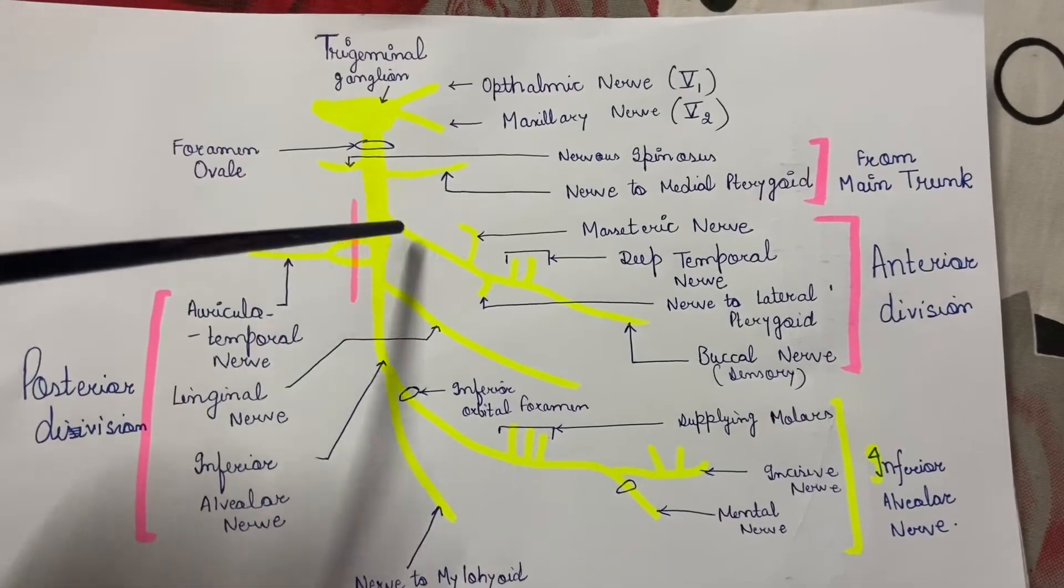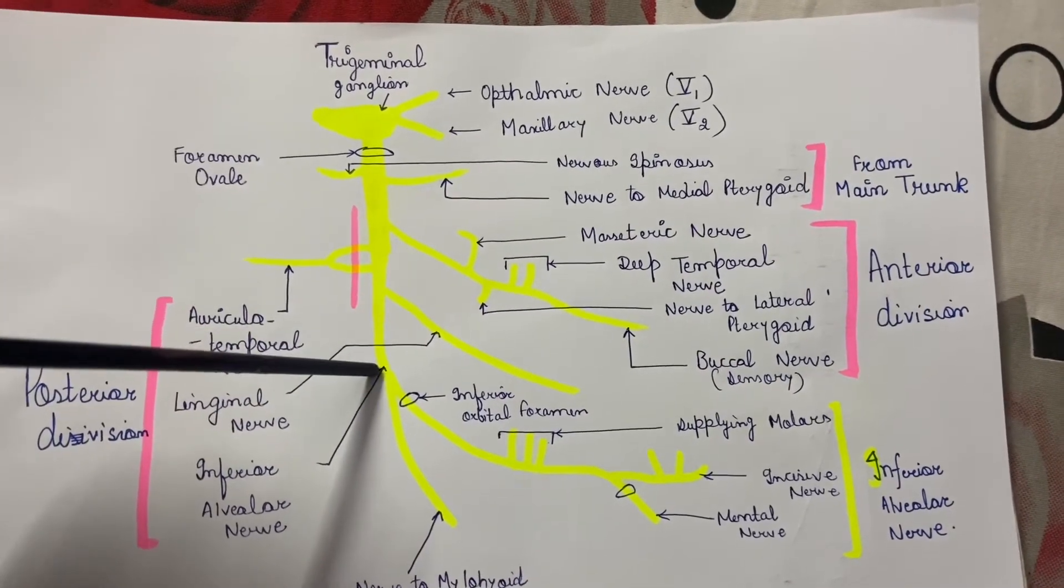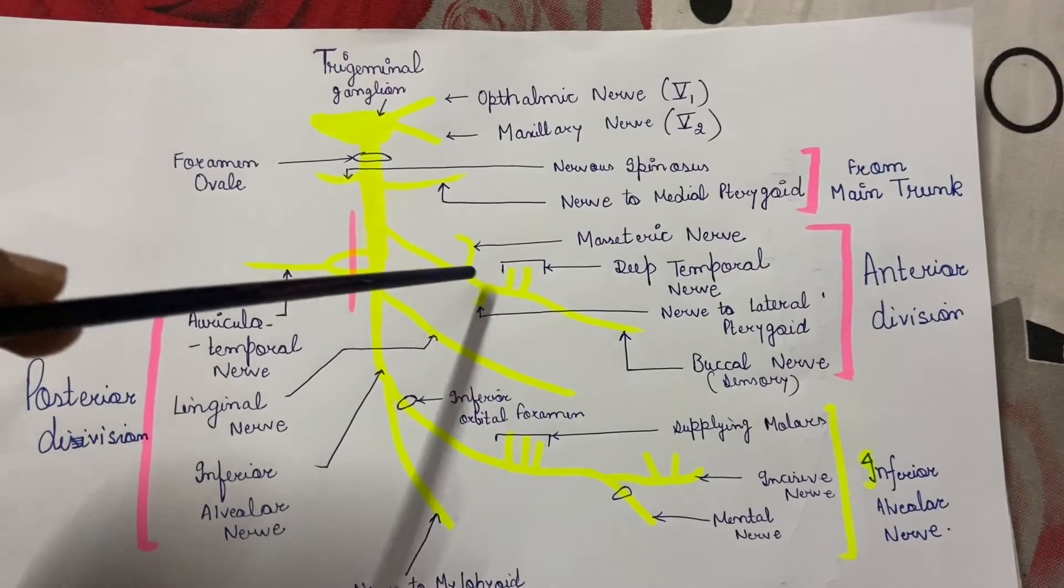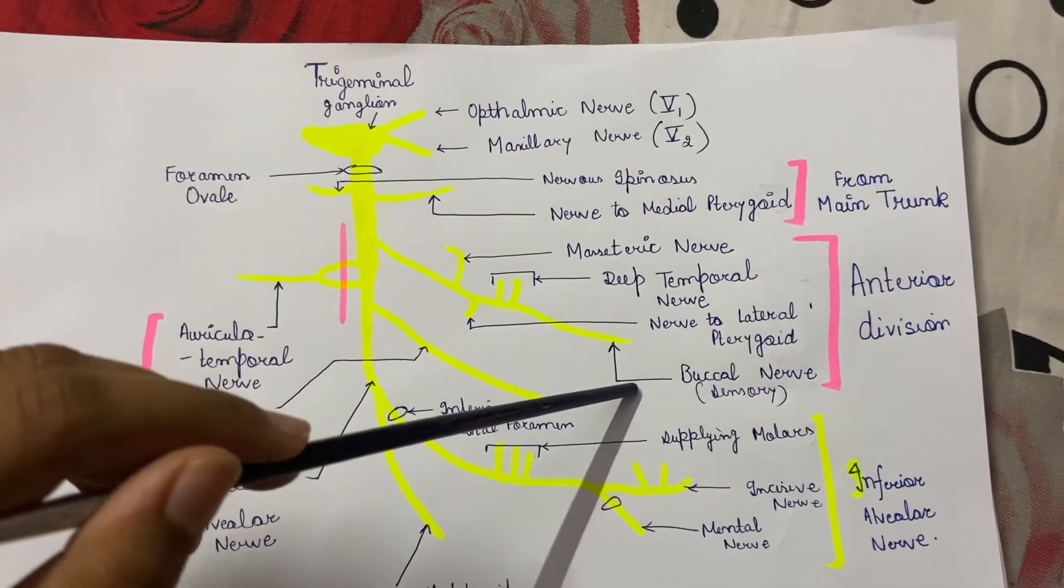Here it divides into two parts: one is the anterior division, which is a thin division, and another one is the posterior division. The anterior division gives all the motor branches except one sensory branch.